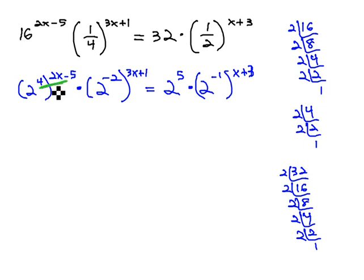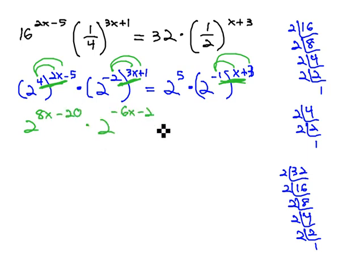We still need to combine these double exponents together. Fortunately, we have an exponent property that says we can multiply them together by distributing each through, giving us 2 to the 8x minus 20, times 2 to the negative 6x minus 2, equals 2 to the 5th, times 2 to the negative x minus 3.